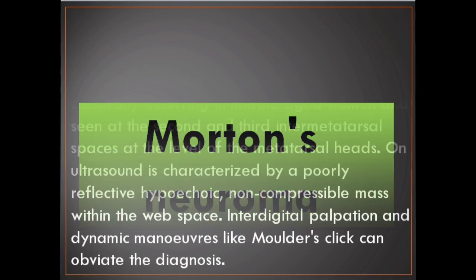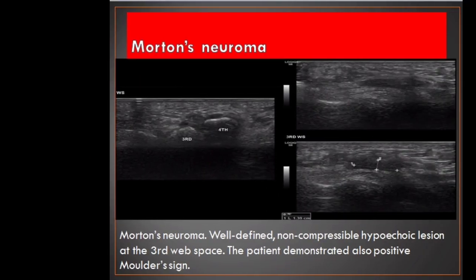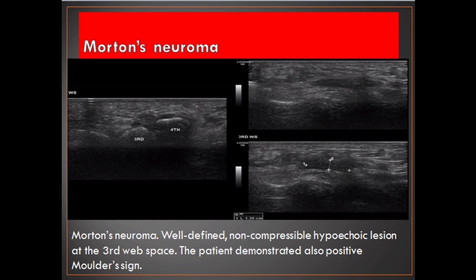Morton's Neuroma. They are pseudotumors, classically occurring in middle-aged women, seen at the second and third intermetatarsal spaces at the level of the metatarsal heads. On ultrasound it is characterized by a poorly reflective hypoechoic, non-compressible mass within the web space. Intradigital palpation and dynamic maneuvers like Mulder's click can aid the diagnosis. Case shown: well-defined, non-compressible hypoechoic lesion at the third web space with positive Mulder's sign.